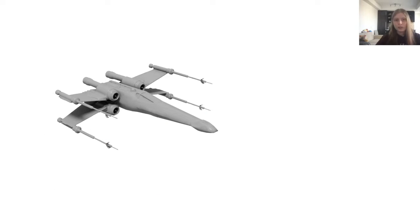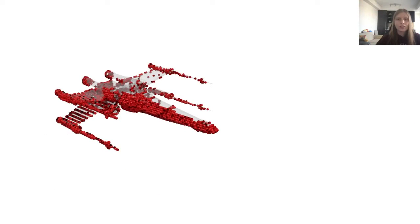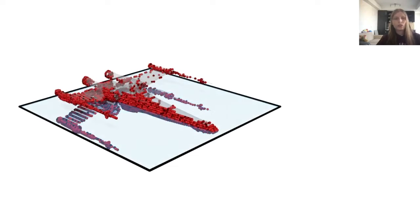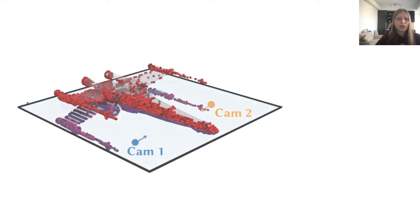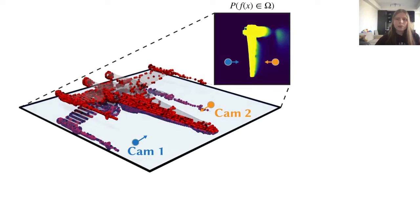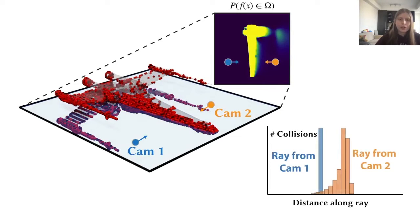Consider, for example, this spaceship. We simulate a point cloud scan of it. For this point cloud, we can place two hypothetical cameras, and if we compute the same probability map, we see that the spread of where the rays may hit the surface is wider for the camera aimed at the region with less data points than the camera directly aimed at the data.